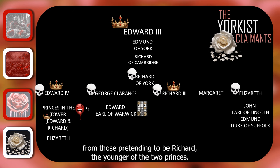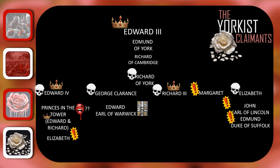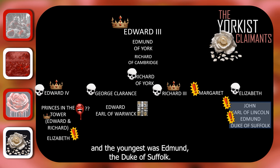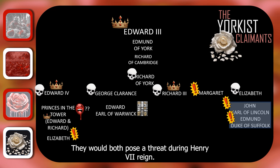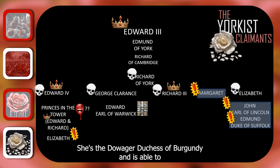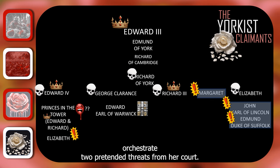There were also key Yorkists who were adults and could stake a claim in their own right. Firstly, the nephews of Edward IV by his sister Elizabeth, the De la Poles: the eldest of the two brothers was John, Earl of Lincoln, and the youngest was Edmund, Duke of Suffolk — both would pose a threat during Henry VII's reign. There was then Margaret, sister to Edward IV. Though she never claimed the throne for herself, she is an important player in this narrative as the Dowager Duchess of Burgundy, able to orchestrate two pretender threats from her court. She would be a thorn in Henry's side until her death in 1503.